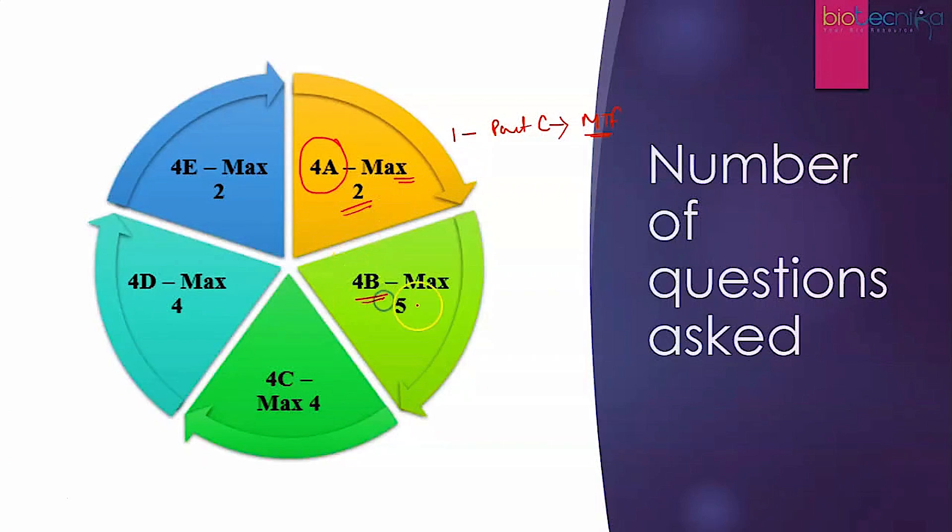When it comes to 4B, you can expect a maximum of 5 questions. It could be 3 Part B questions or 2 Part C, or the other way around. When it comes to cellular communication, you can expect 4 questions maximum. Sometimes they stick only to 3 questions, maybe 2 Part C questions and 1 Part B question.